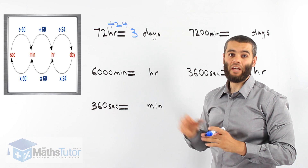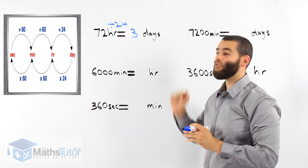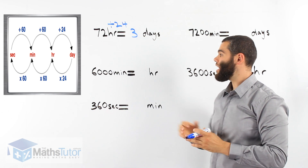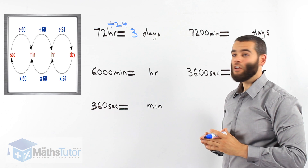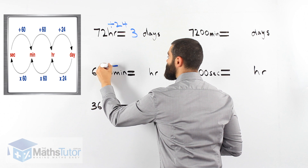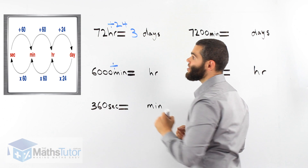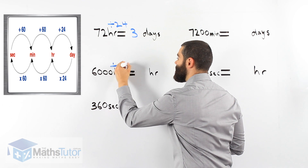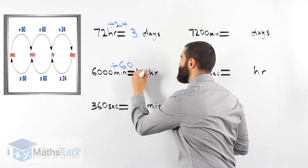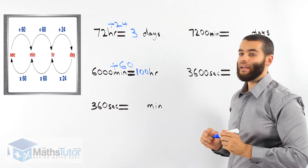Even though you may be using a calculator, you can make mistakes on a calculator. So when you show your working out, at least you'll get some kind of mark for it — it's very important to get into that good habit. Here we have minutes to hours: 6,000 minutes going to hours. We are dividing. Minutes to hours, we divide by 60. 6,000 divided by 60 is 100 hours. There are 6,000 minutes in 100 hours.